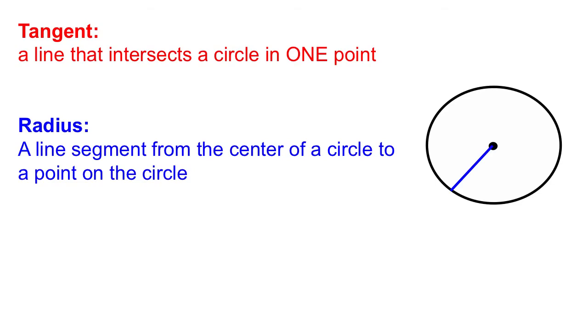A radius is a line segment from the center of a circle to a point on the edge of the circle. You can see a radius drawn here in blue.